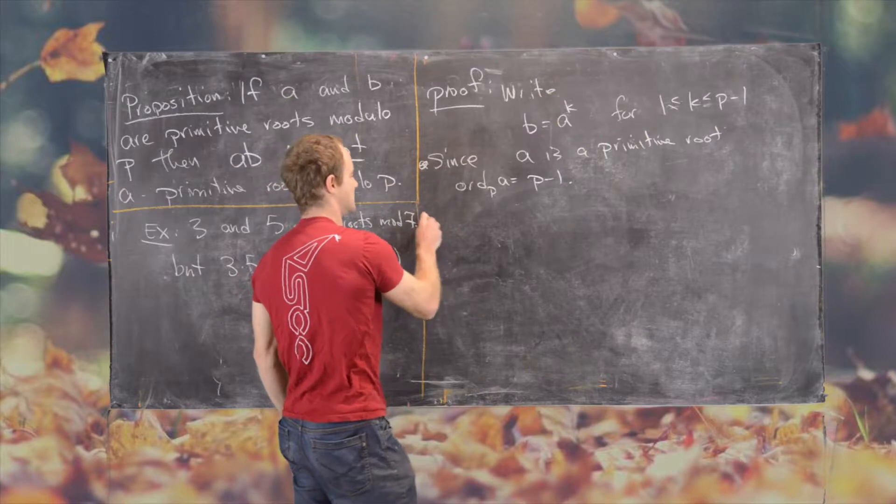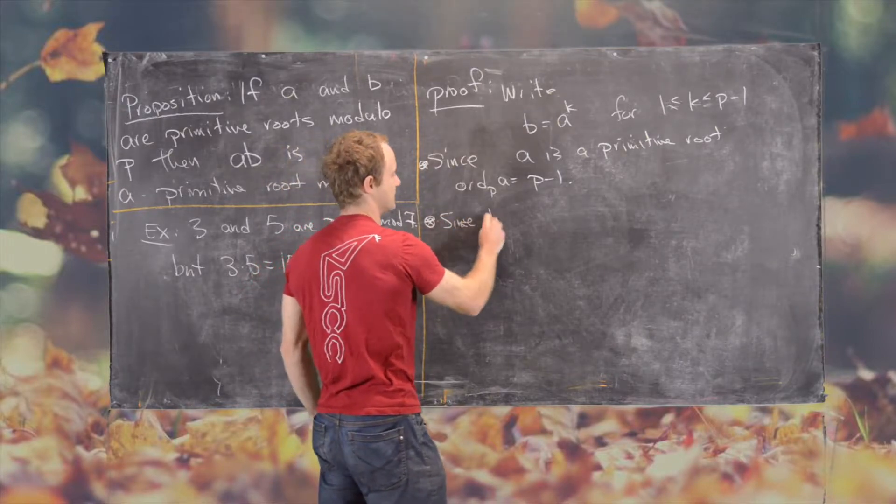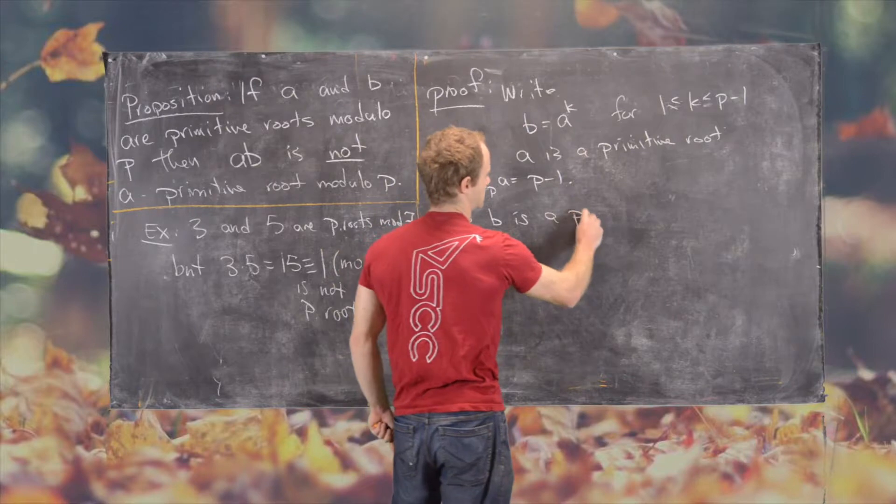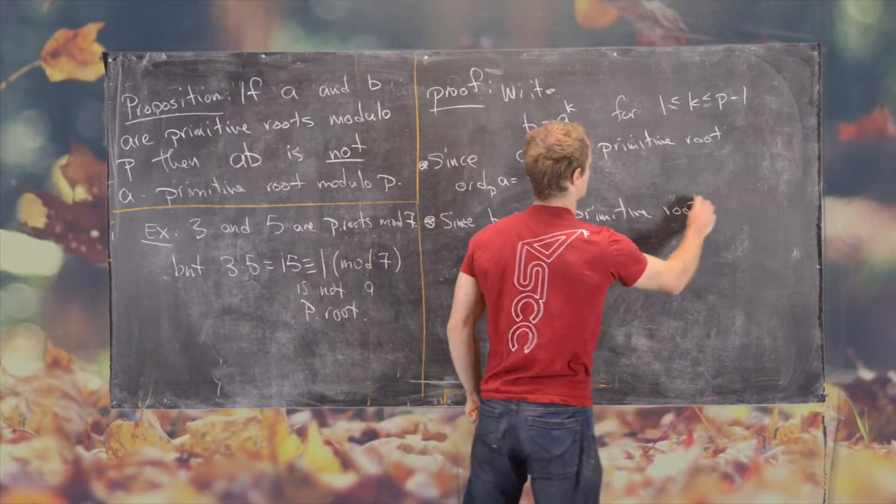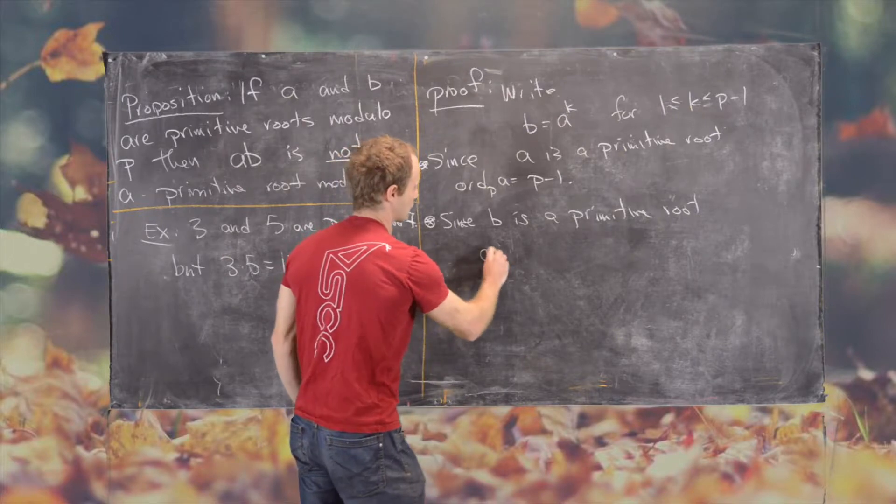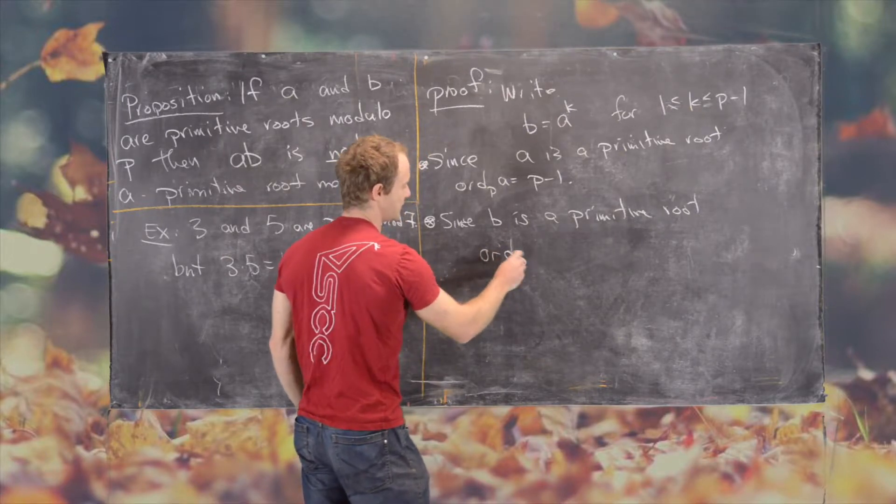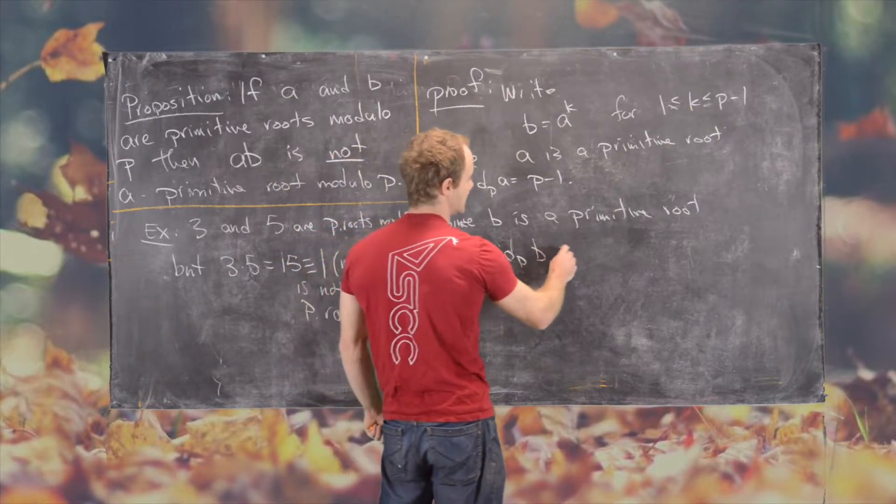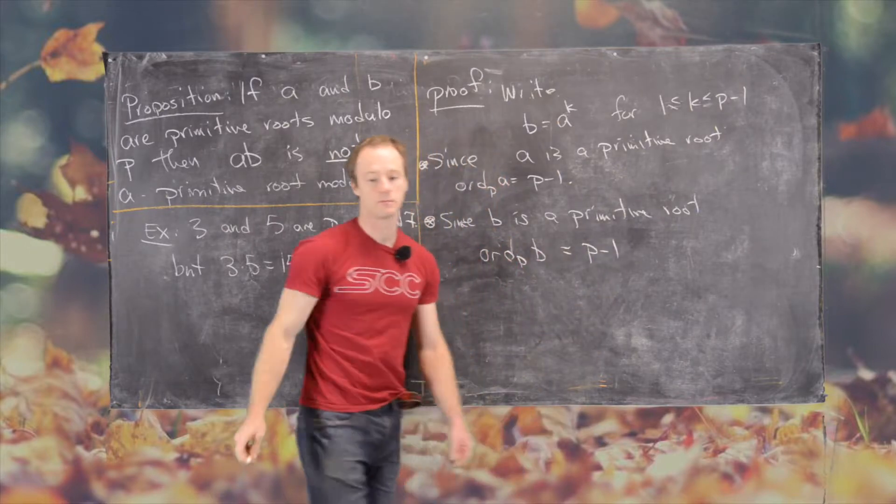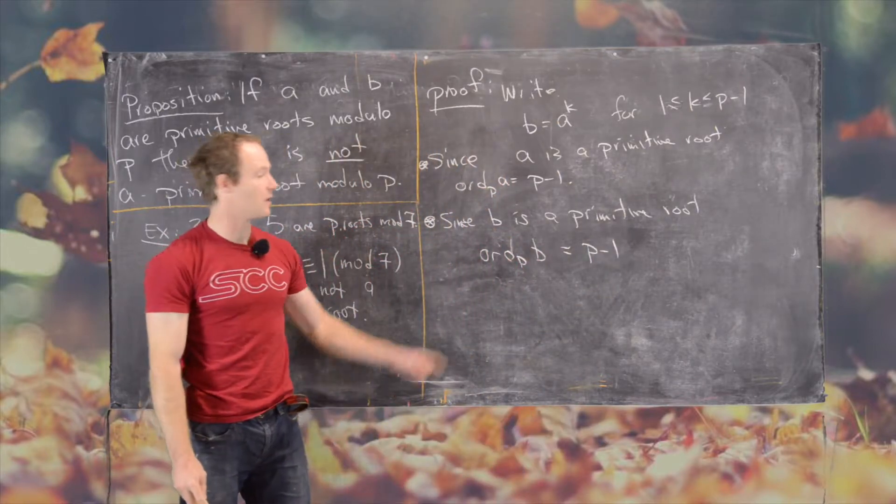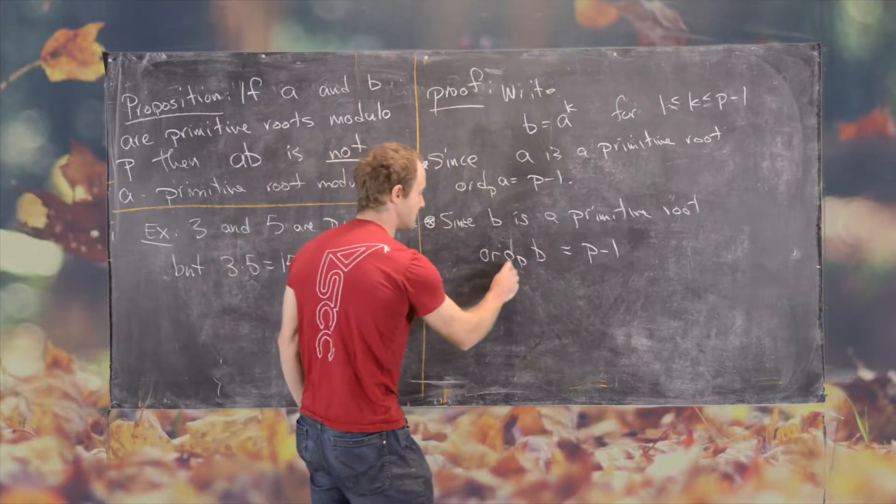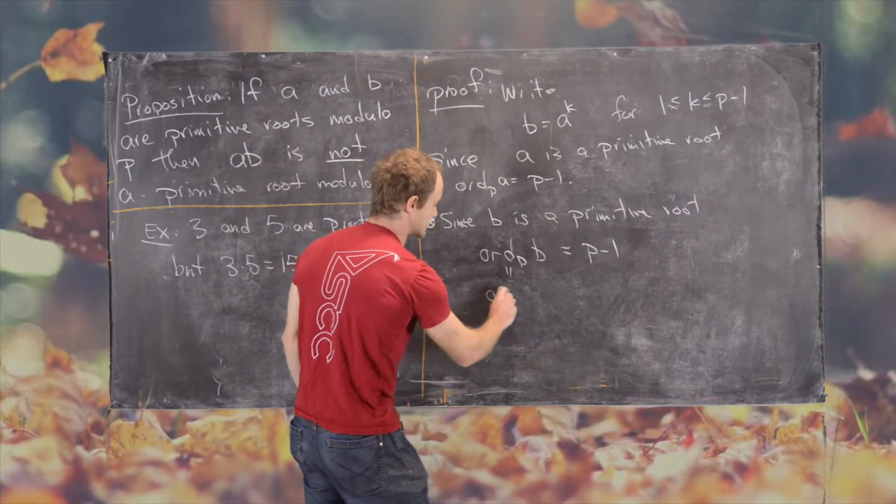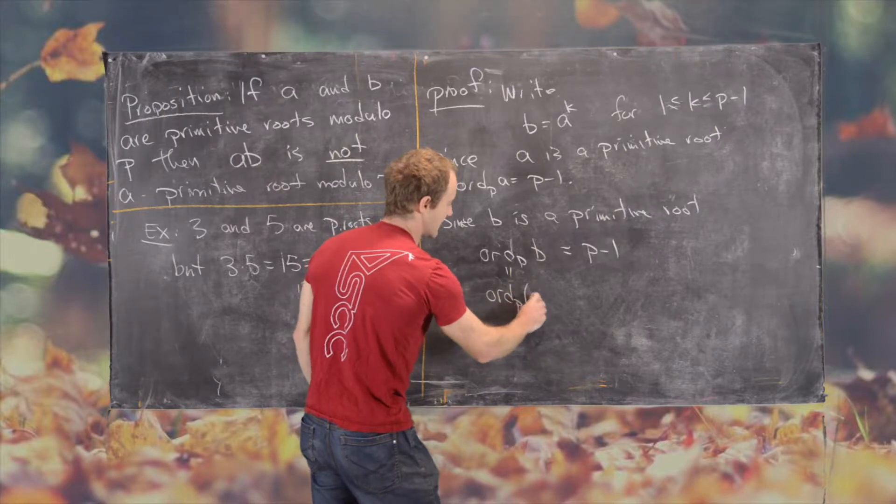And then, since B is a primitive root, we know that the order of P of B equals P minus 1. But another thing that we know, since B is equal to A to the K, we know that this is the same thing as the order mod P of A to the K.